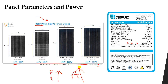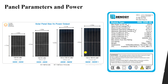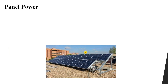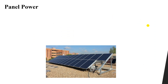PV system power is usually rated in kilowatt-peak (kWp). The value of Pmax represents the peak power. So we can say that Pmax is the kilowatt-peak rating of the PV system.